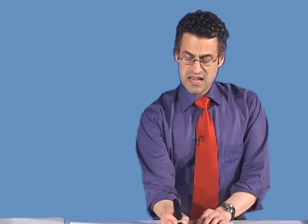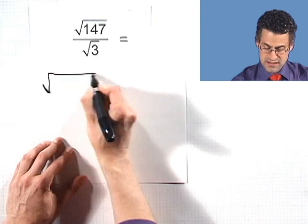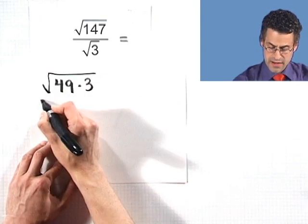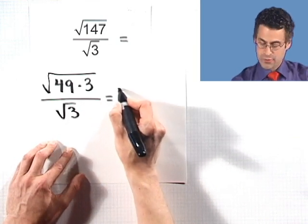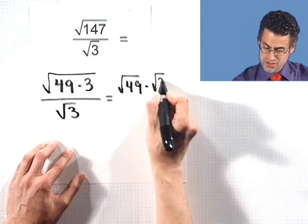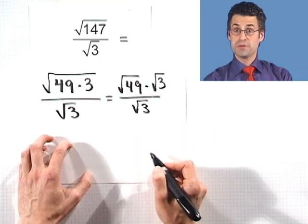It's to realize that I can factor the top a little bit. The top actually can be factored as the square root of 49 times 3, all over the square root of 3. Well, then I use that property that allows me to break up that product into two pieces. And then I can simplify, actually.